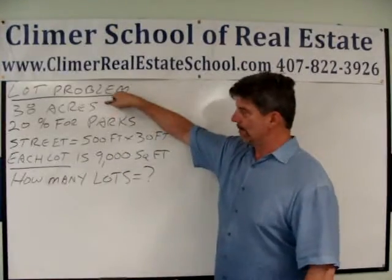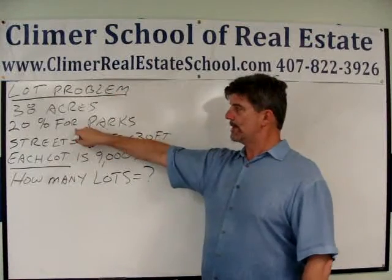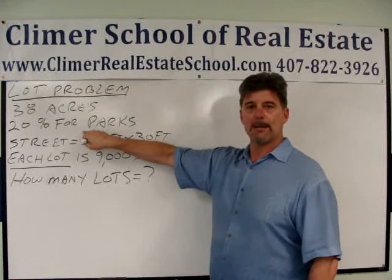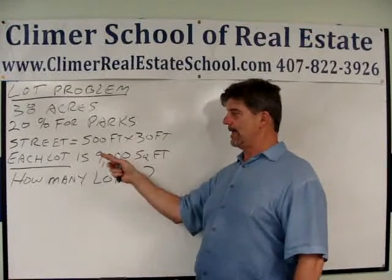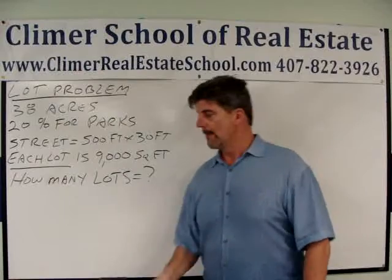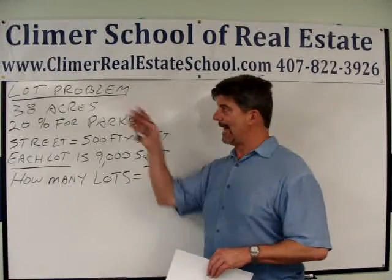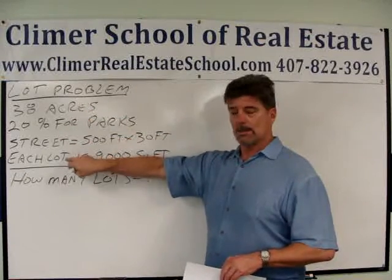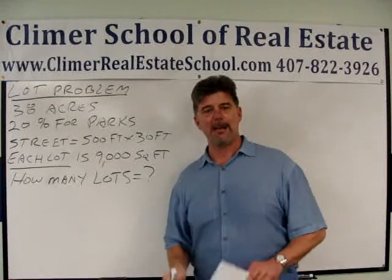We have 38 acres. 20% of those 38 acres is set aside for parks and common areas — that's pretty standard in real life. There's a street 500 feet by 30 feet, which means you can't build on it. Every single lot is at least 9,000 square feet. So after you figure out how much you have, you take away what you can't use, then divide by the lots — how many lots do you have?